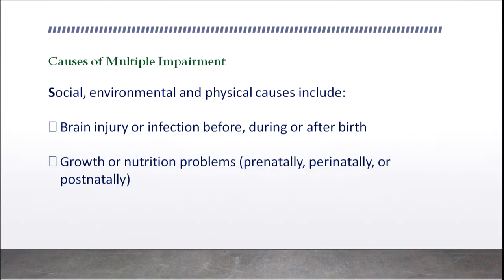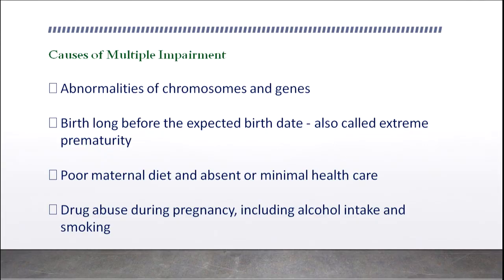Causes of multiple impairment can be social, environmental, and physical, and generally include brain injury or infection before, during, or after birth; growth or nutritional problems; chromosomal and genetic abnormalities; extreme prematurity; poor maternal diet and absent or minimal healthcare; and drug abuse during pregnancy, including alcohol intake and smoking.